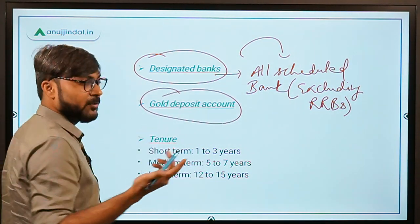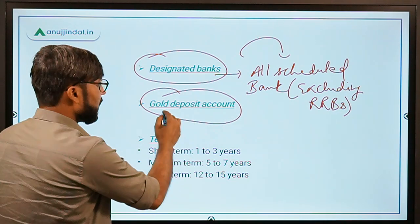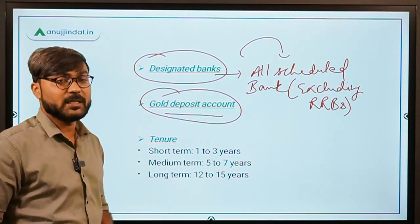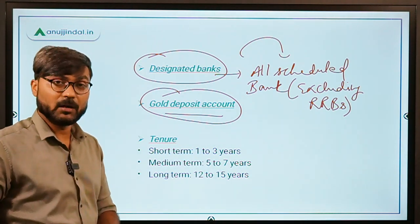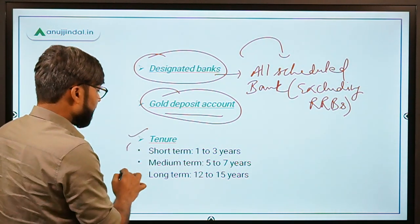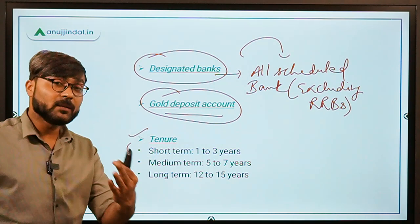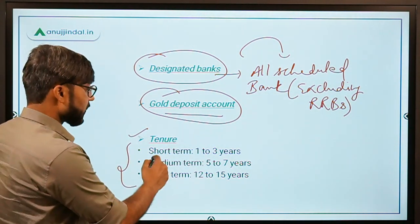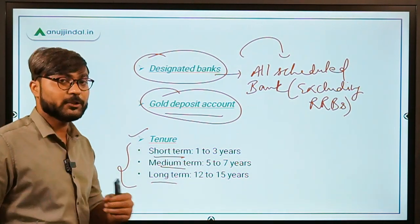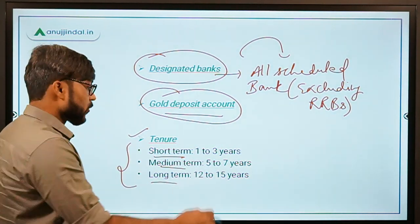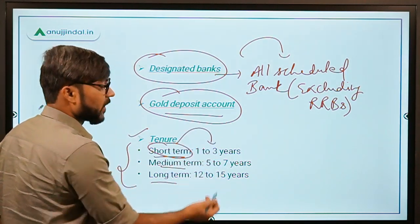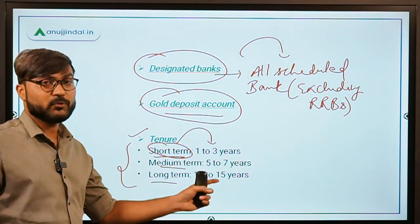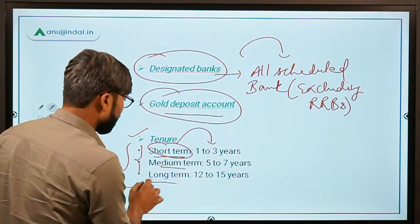In the gold deposit account, you deposit your gold in any physical form — jewelry, coins, or bars. Regarding the tenure, there are three terms: short term is 1 to 3 years, medium term is 5 to 7 years, and long term is 12 to 15 years. This is easy to remember using the sequence of numbers.